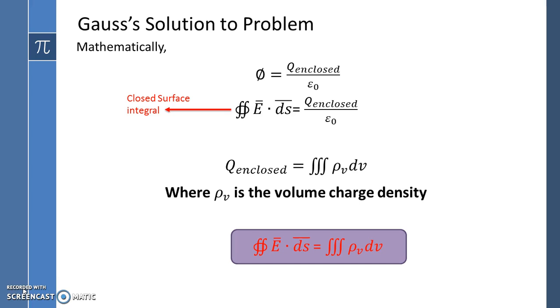Mathematically, the flux phi is equal to the charge enclosed by the volume divided by the medium constant epsilon naught. The flux phi, according to the definition of electric flux, can be written as E bar dot ds bar of the surface integral, which is equal to q enclosed by epsilon naught. Here, we note that the integral sign has been converted with a small circle onto it, which indicates that the surface is a closed surface.